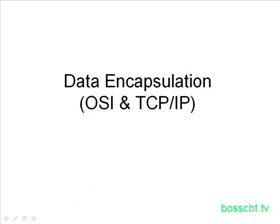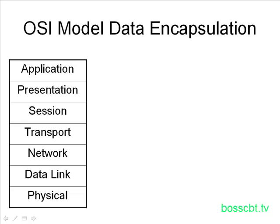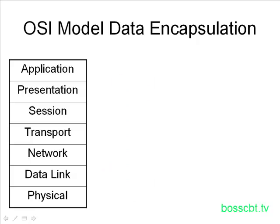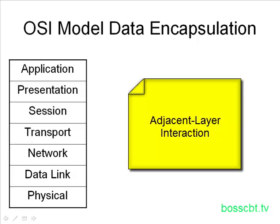We'll begin by taking a look at data encapsulation in the OSI model. Here we have the OSI model, with the application layer at the top working its way down through presentation and session all the way to the physical layer at the bottom. When each layer works with the layer above or below it, this interaction is commonly referred to as adjacent layer interaction. Each layer has to interact with the two layers adjacent to it — the layer above and the layer below, if one exists.